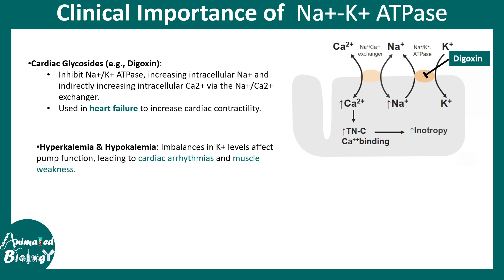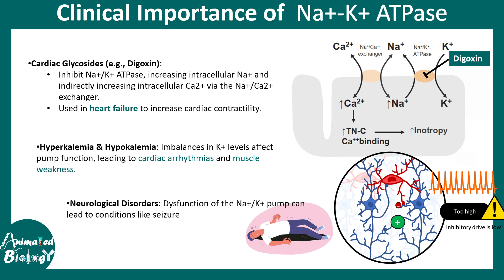There are also conditions like hyperkalemia and hypokalemia — imbalances of the potassium ion — which are very dangerous for cardiac muscles and may lead to cardiac arrhythmia and muscle weakness. That is why maintaining a healthy balance of sodium and potassium in the blood and different cells is critically important.